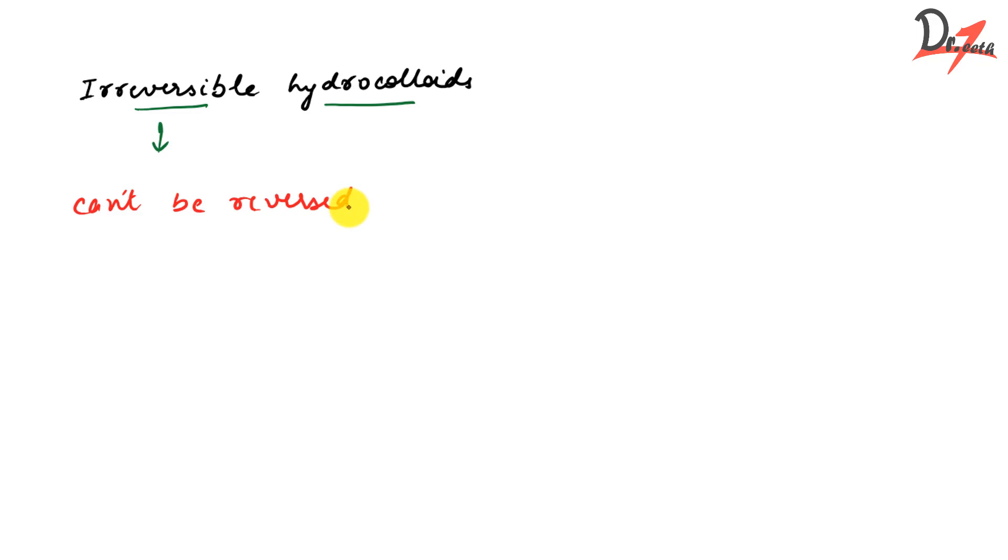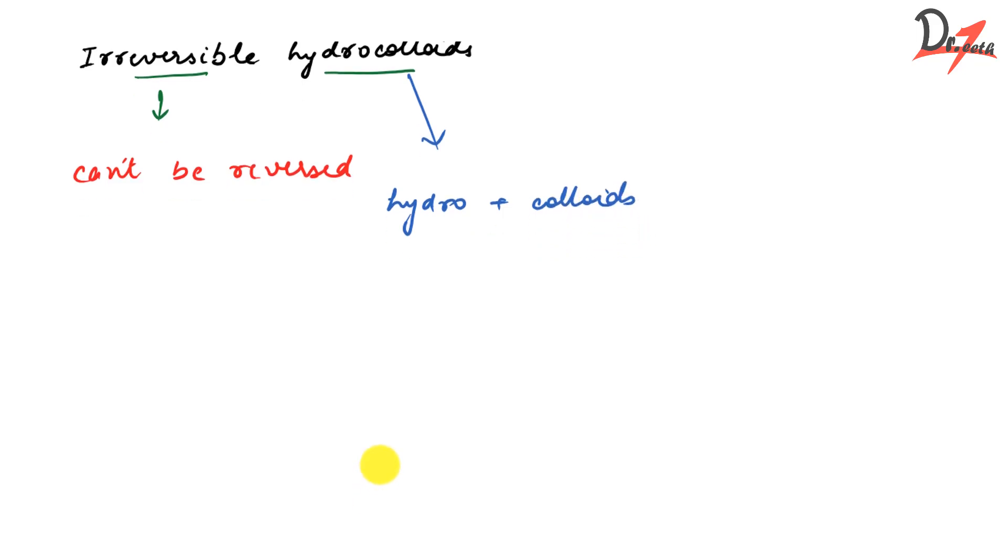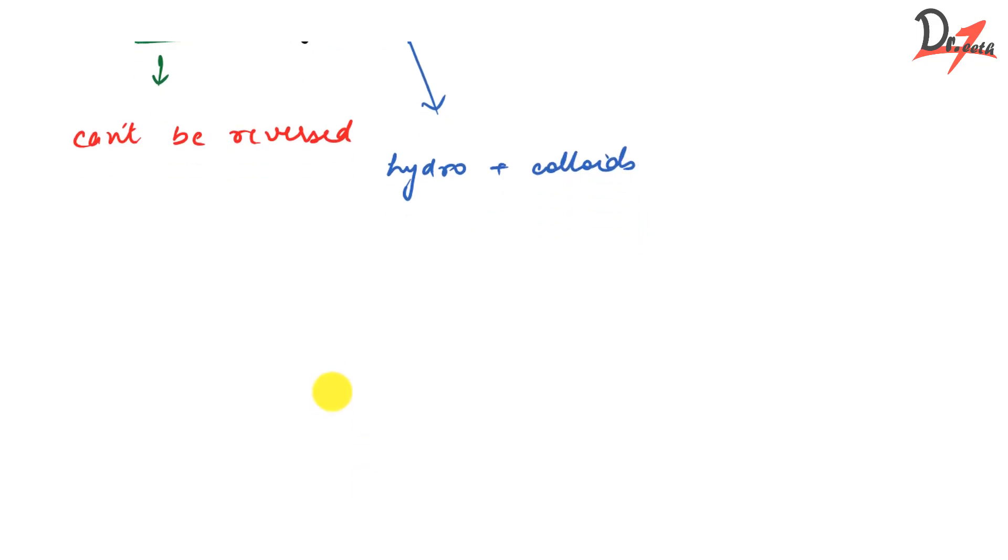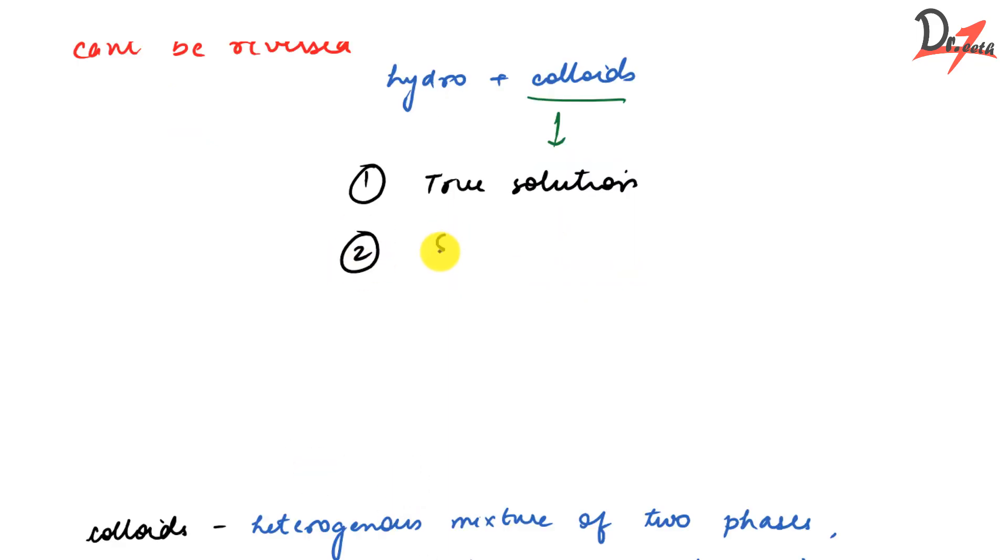Now hydrocolloid. To understand hydrocolloid, let me just break this term into two. We have hydro plus colloids. Now, first we will see what are colloids. And to know what is colloid, let me go to the very basics. So any solution, it can be in three forms. It could be a true solution. It can be a suspension and it can be a colloid.